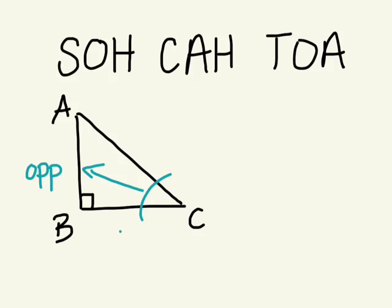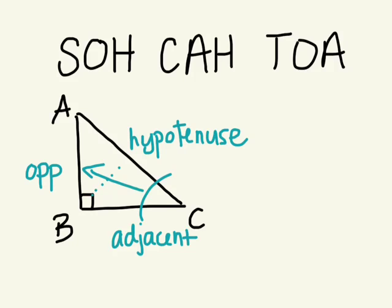This side here is which side? Adjacent. And across from the right angle is always the hypotenuse. You need to know how to label your right angle triangles and how to use SOHCAHTOA.